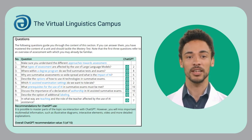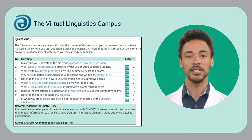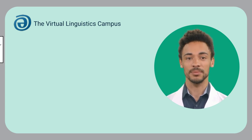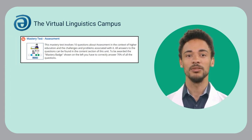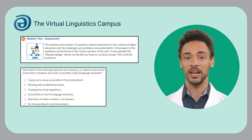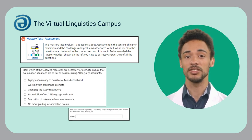My recommendation: use the question sheet of the 'how to proceed' section for guidance. If you can answer the questions, great. If not, either click on the hyperlinks or use ChatGPT for help. The mastery test of this unit involves 10 questions about assessment in the context of higher education and the challenges and problems associated with it.